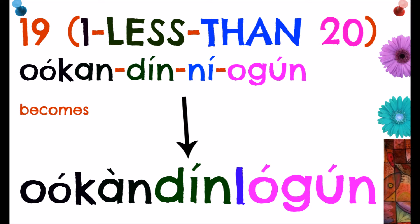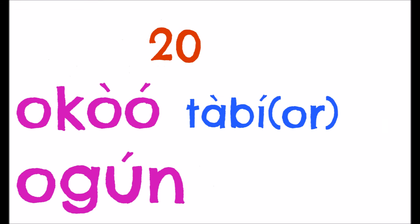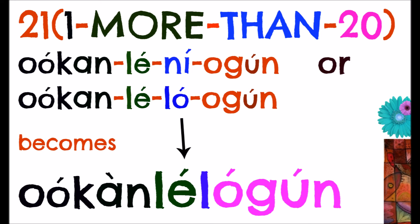Nineteen is 'one less than twenty' — 'okan din ni ogun' — which becomes 'okan dilogun.' Twenty is 'ogun.'